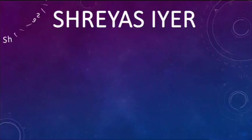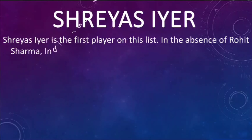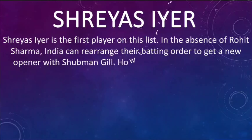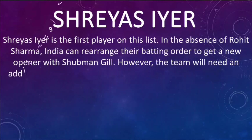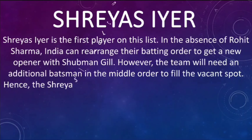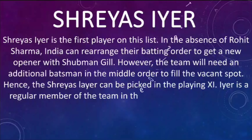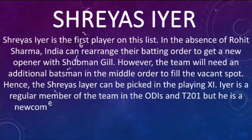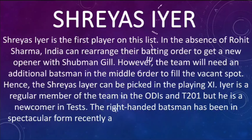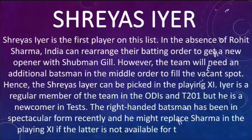Shreyas Iyer is the first player on this list. In the absence of Rohit Sharma, India can rearrange their batting order to get a new opener with Shubman Gill. However, the team will need an additional batsman in the middle order to fill the vacant spot, and hence Shreyas Iyer can be picked in the playing 11. Iyer is a regular member of the team in ODIs and T20Is but is a newcomer in tests. The right-handed batsman has been in spectacular form recently and he might replace Sharma in the playing 11 if the latter is not available for the India versus England test.